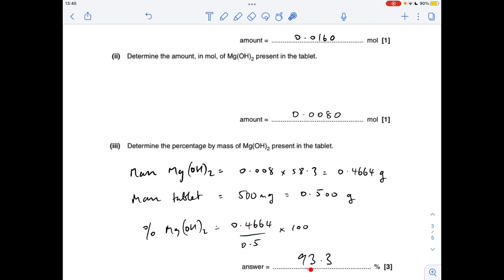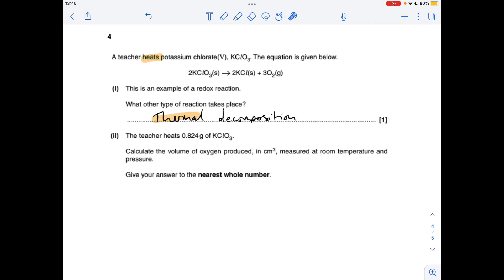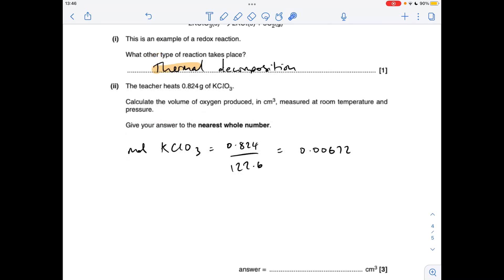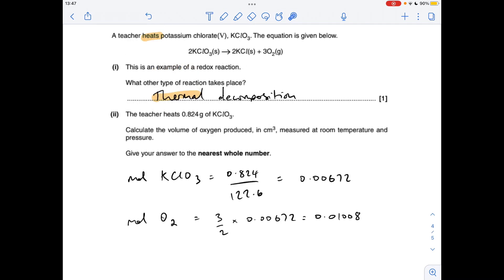Number four: what type of reaction has taken place? So the teacher's heated the potassium chloride 5—you can see it's broken down—so that's thermal decomposition. Moving on to the calculation, the first thing we need to do is work out the moles of potassium chloride 5 that the teacher's heated, so mass over MR, which gives us that. The moles of oxygen, you can see in the equation, is a 2 to 3 ratio of the potassium chloride 5 to oxygen.